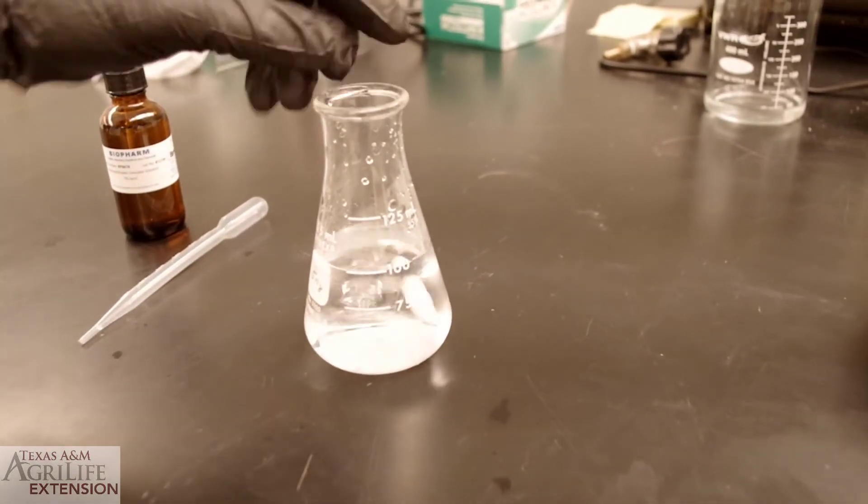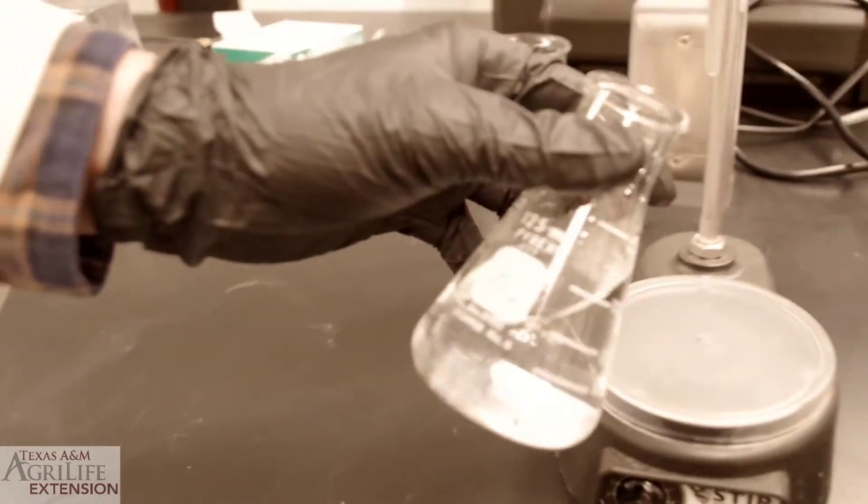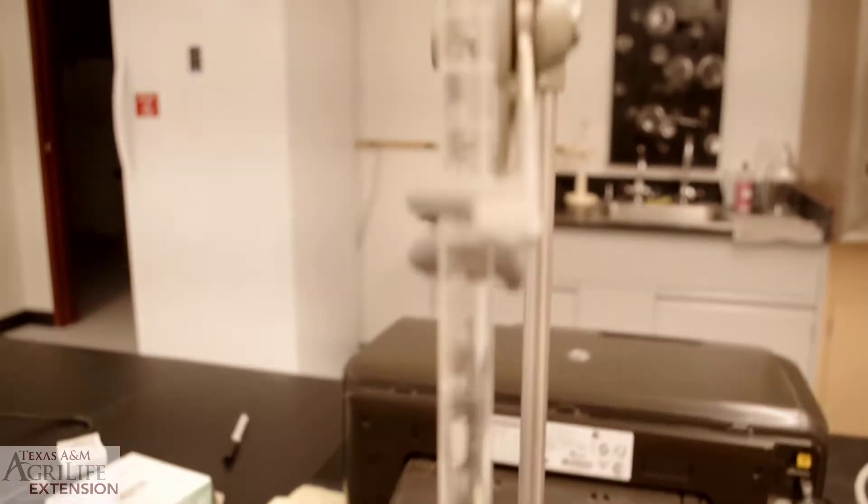We add a stir bar to our flask and place the sample on a stirring plate underneath our titration burette.